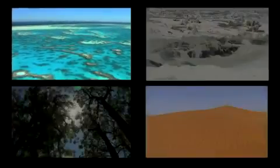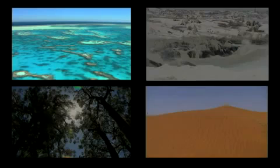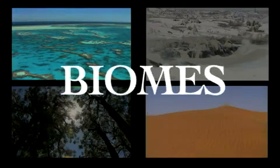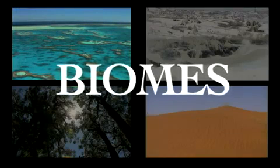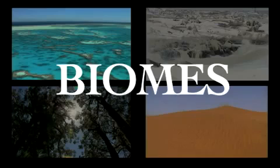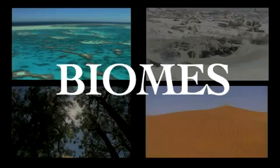Scientists talk about general ecosystem types. They call them biomes. A biome is a group of ecosystems that have a similar climate and similar plant and animal species.